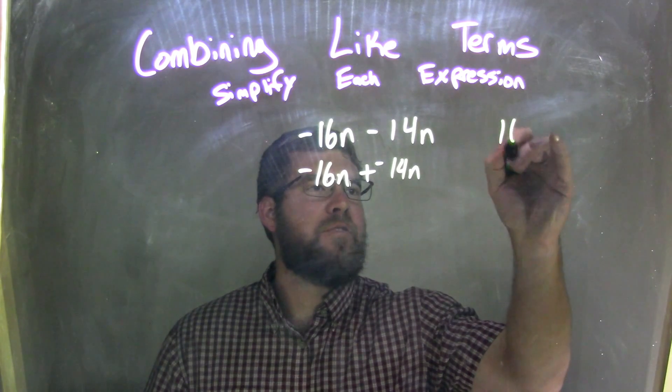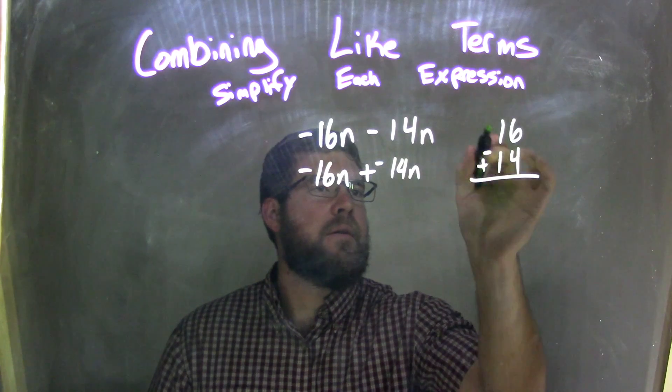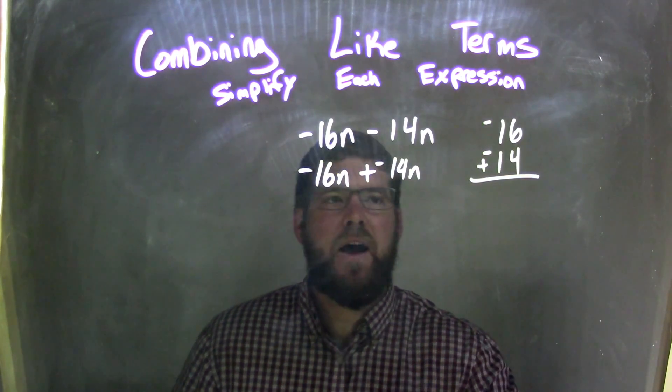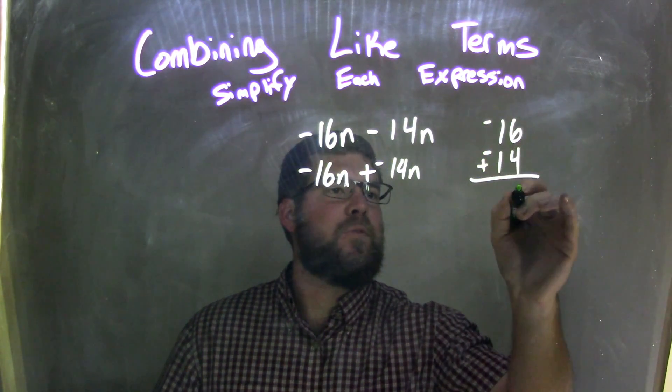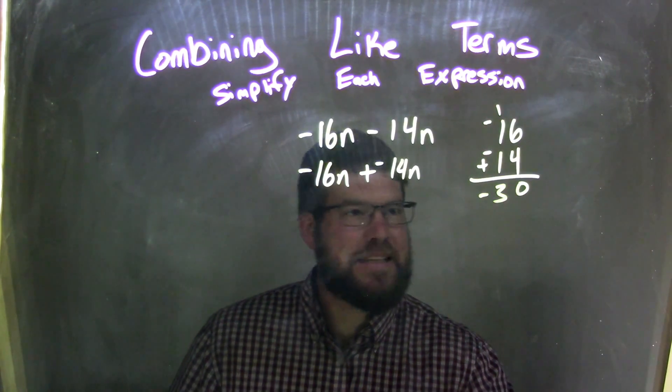Let's do it on the side, do the traditional method if you need it. Don't go to that calculator. Negative 16 plus negative 14: 6 plus 4 is 10, carry the 1, 1, 1, 1 is 3, and two negatives added together is negative.